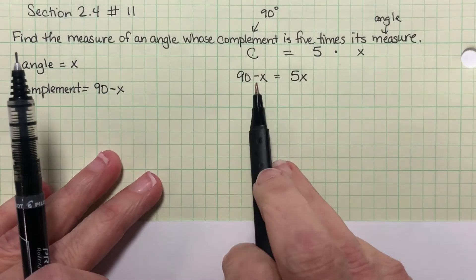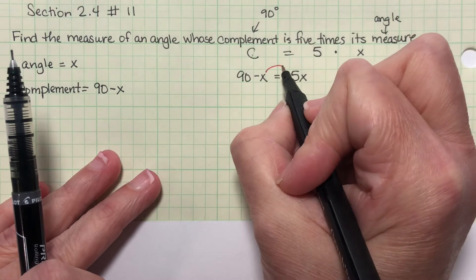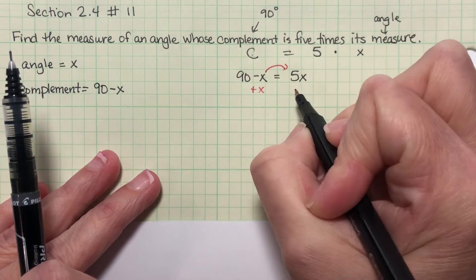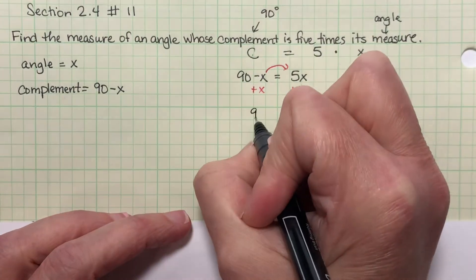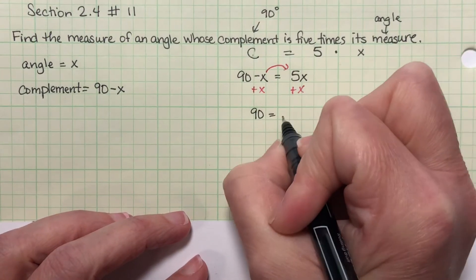Now to solve this I need to move the X over to here. So I'm going to add X to both sides and I get 90 is equal to 6X.